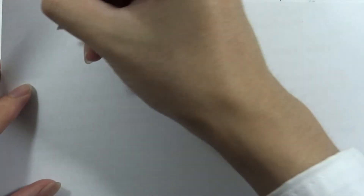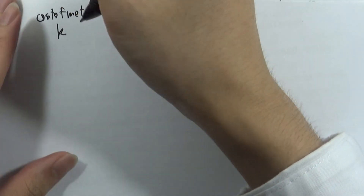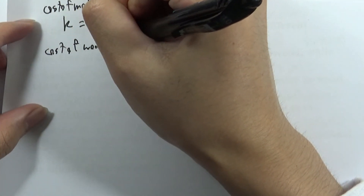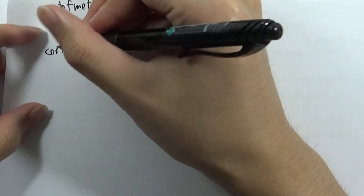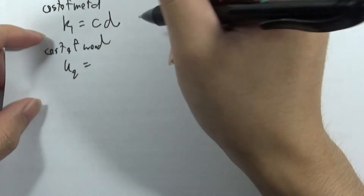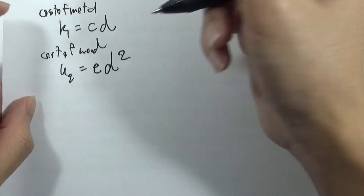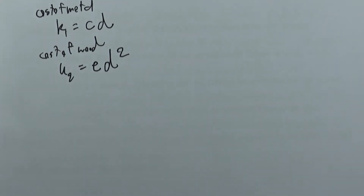So the cost of metal is equal to k times the diameter (Metal cost = k·D), and the cost of metal is related to the cost of wood through the given proportionality constants K1 and K2.